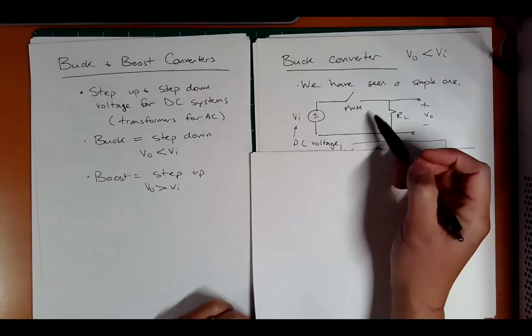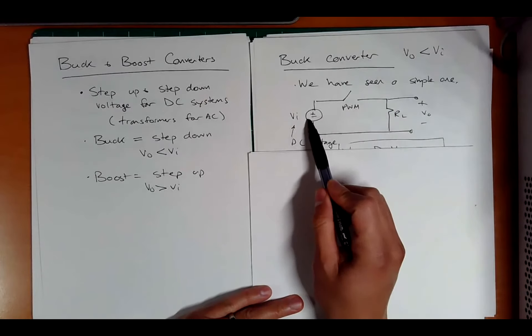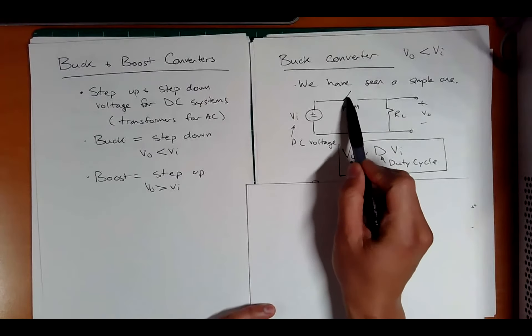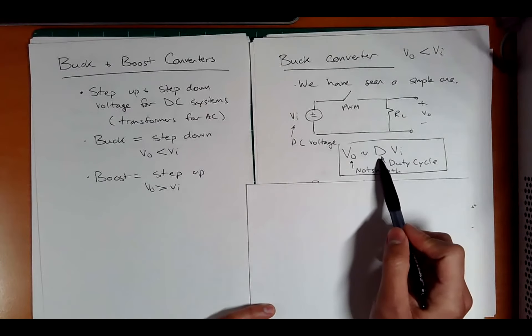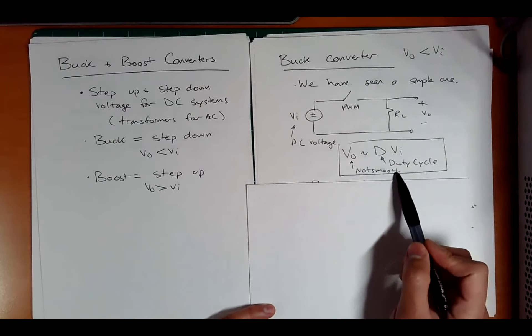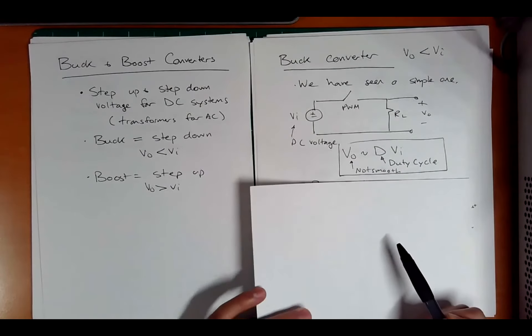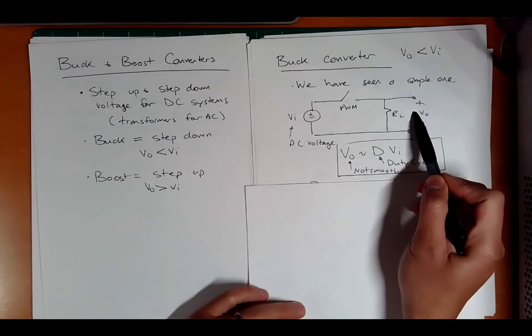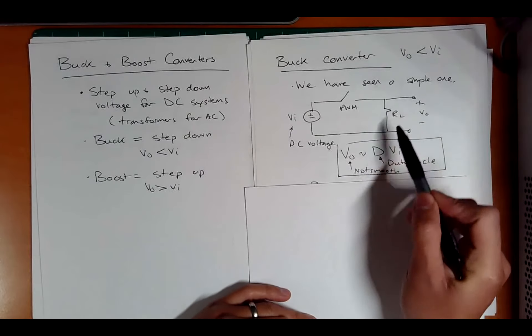Let's look at an example of a buck converter. We've seen a very simple one. Imagine we have a transistor doing PWM. We have some load, and here's your input and output voltage. If you pulse this PWM with a certain duty cycle, the duty cycle is just a square wave where the ratio of the on time to the PWM period is the duty cycle, then the output voltage is approximately the input voltage times that duty cycle. Now, this is not smooth. You're relying on maybe the inertia of the load if it's a motor, both mechanical and electrical, to smooth it out.